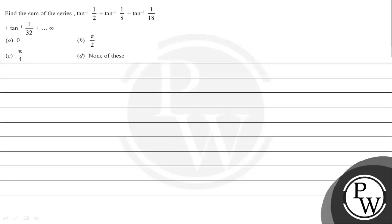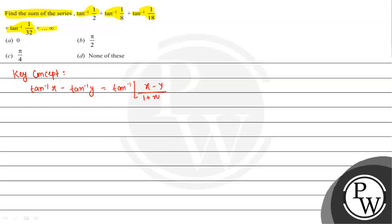Let's read the given question. Find the sum of the series tan inverse 1/2 plus tan inverse 1/8 plus tan inverse 1/18 plus tan inverse 1/32, up to infinity. The options are given below. The key concept we will use here to solve this question is the formula: tan inverse x minus tan inverse y equals tan inverse of (x minus y) divided by (1 plus xy).